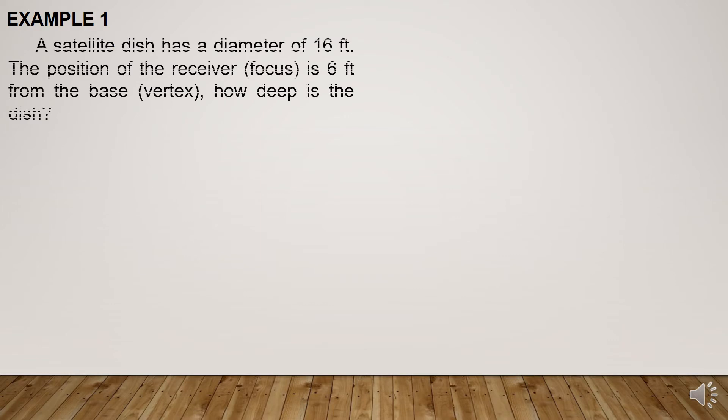Example number 1. A satellite dish has a diameter of 16 feet. The position of the receiver, which is the focus, is 6 feet from the base, which is the vertex. How deep is the dish?